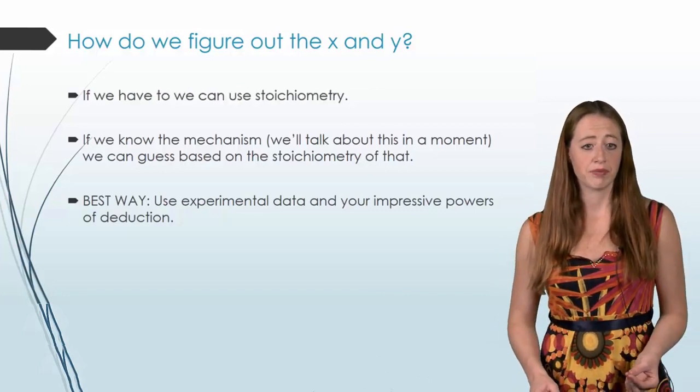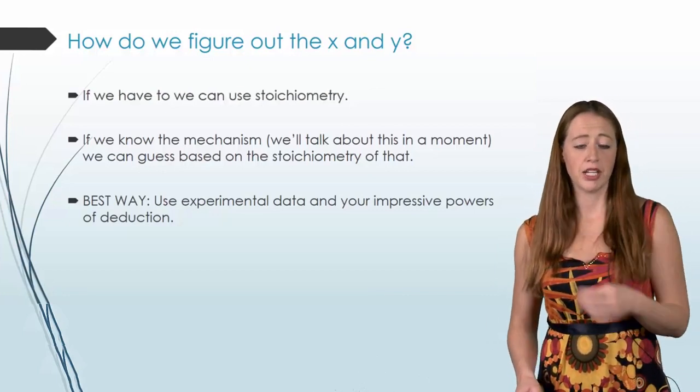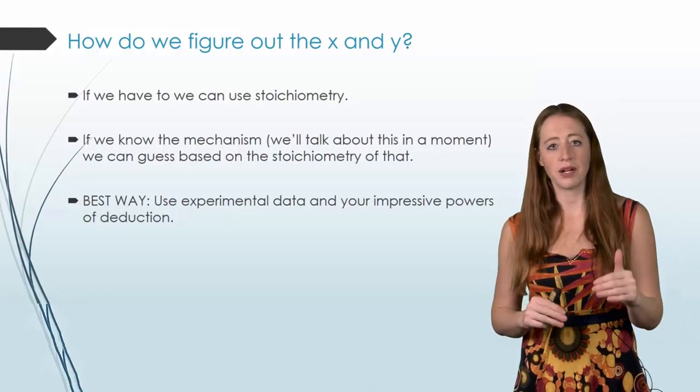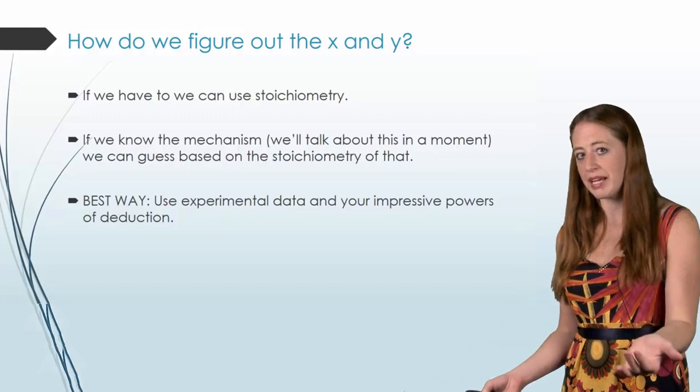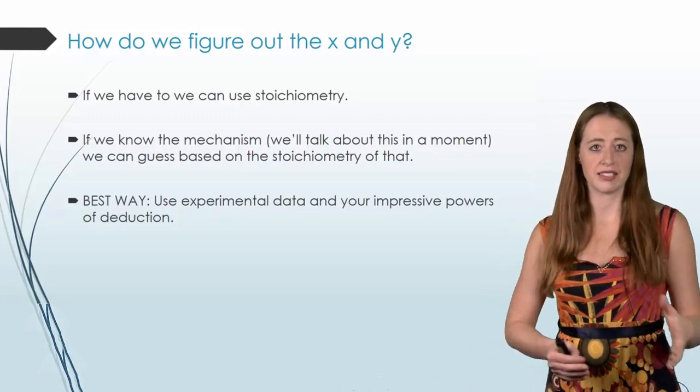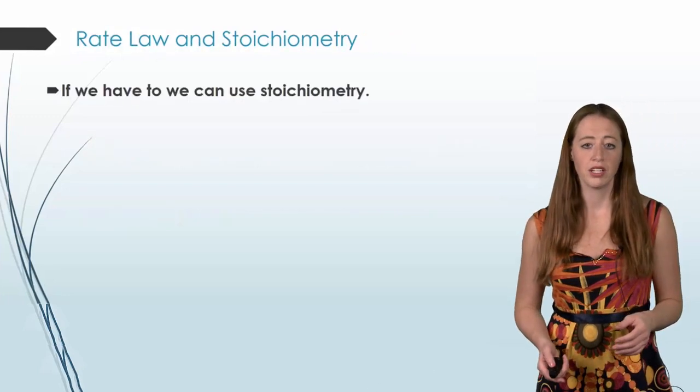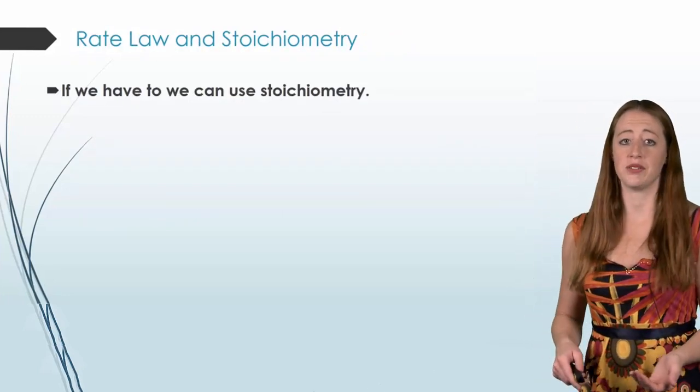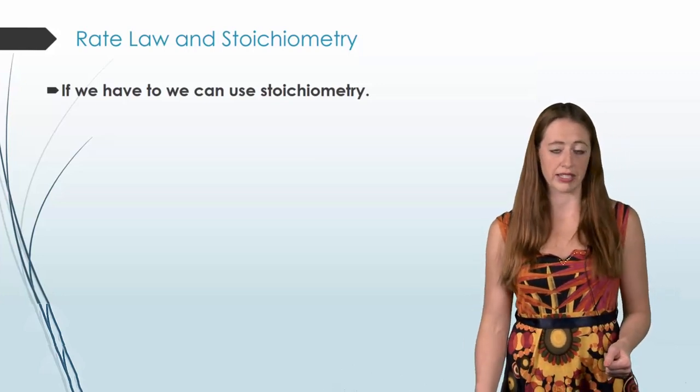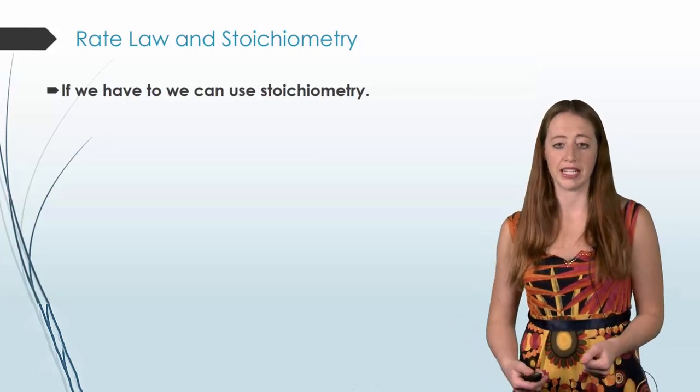Now, in reality, we typically end up looking at these last two and comparing them to decide, well, based on experimental data, is our mechanism correct, or trying to derive a mechanism. Real science tends to do a lot of going back and forth there. In this video, we're going to stick to using stoichiometry if we need to, just to kind of get you comfortable with the idea of a rate law first, and then we'll move into the other ones.